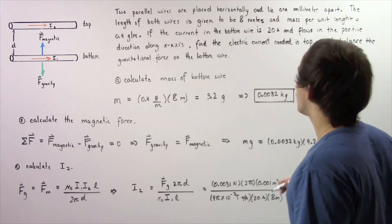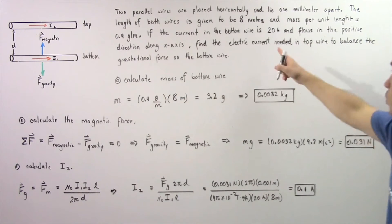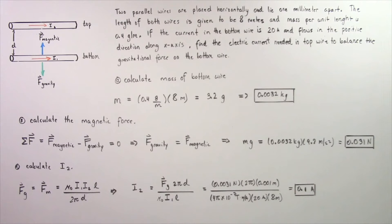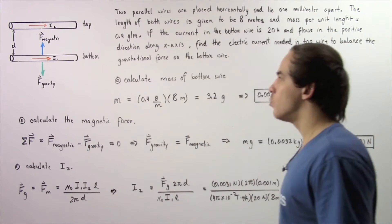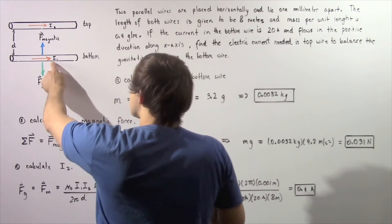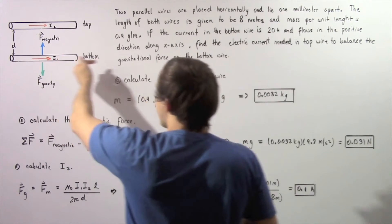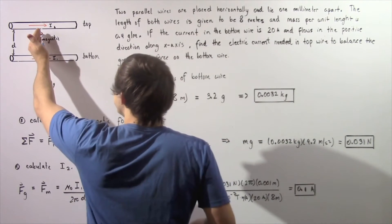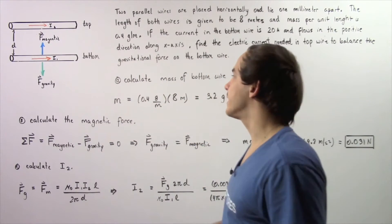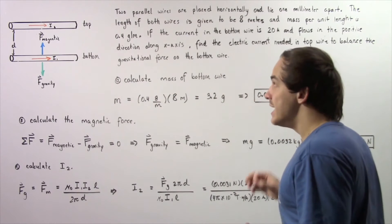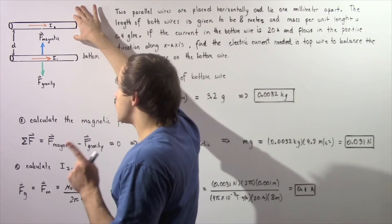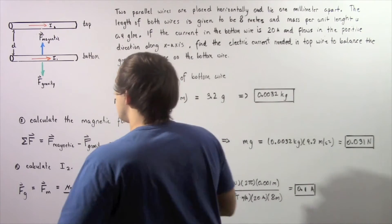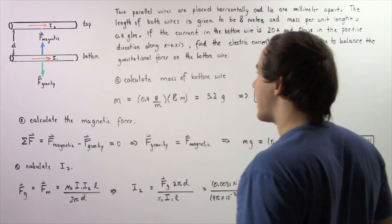The electric current in the bottom wire I1 is given to be 20 amps and flows in the positive direction along the x-axis. Find the current needed in the top wire to balance the gravitational force acting on the bottom wire. This bottom wire which has an electric current I1 traveling in the positive direction will feel a gravitational force acting on it which will point in the negative direction along our y-axis. The top wire will also have an electric current given by I2 which will flow in the positive direction along the x-axis.